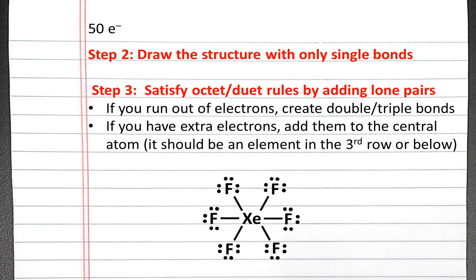If we count up all of the electrons that we've used so far, we'll have used 48 electrons. So we have two of our 50 valence electrons left over. These electrons will add to xenon.